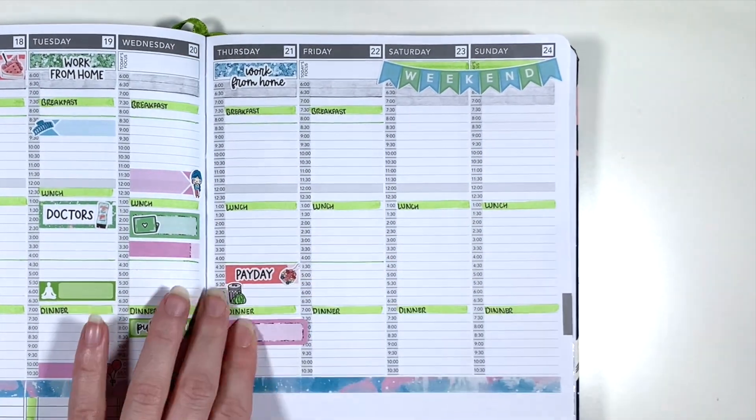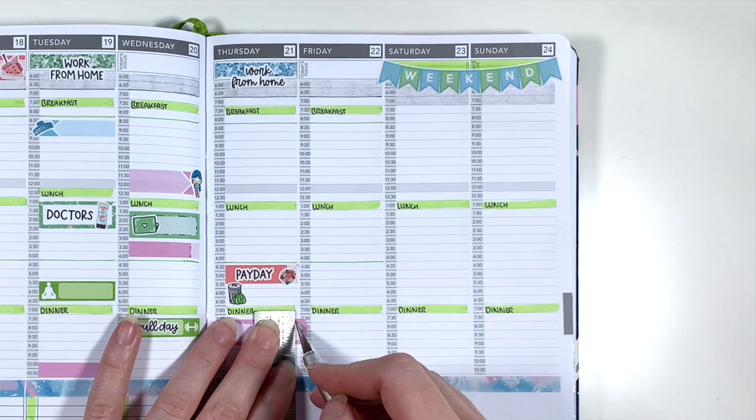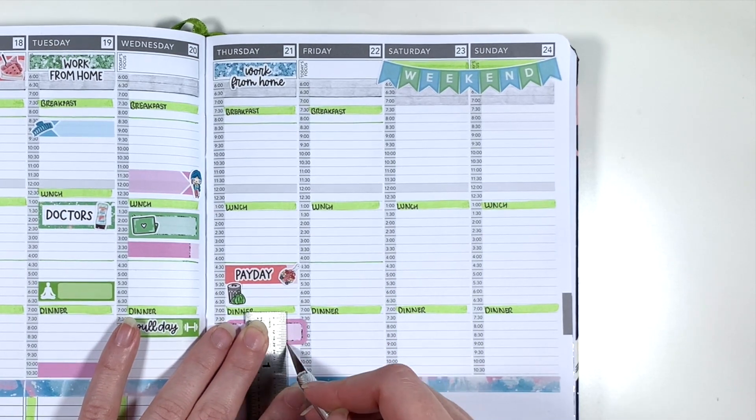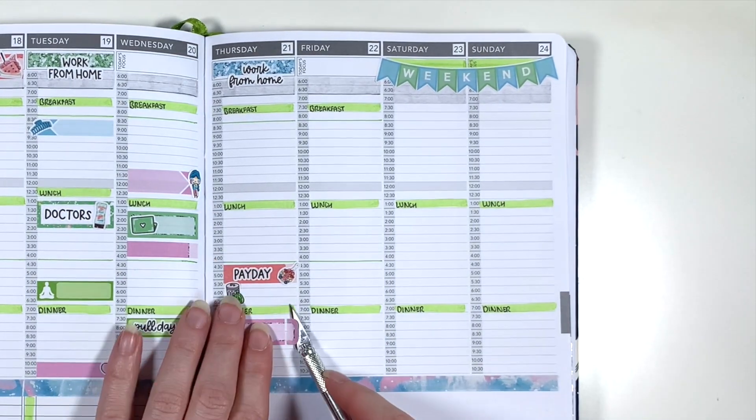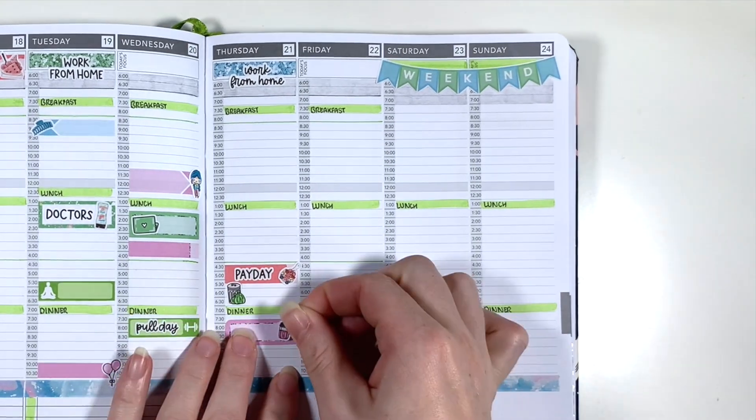Next I'm using a quarter box with the shaker cup doodle from planner face to mark in my penultimate PT session with my current trainer. It still feels really weird to say because I have been training with him for the last three years.